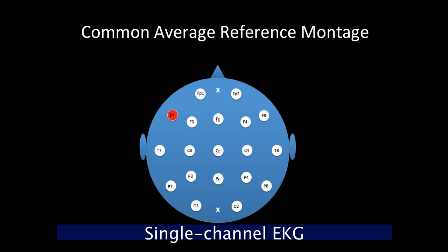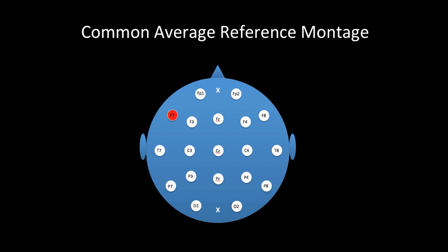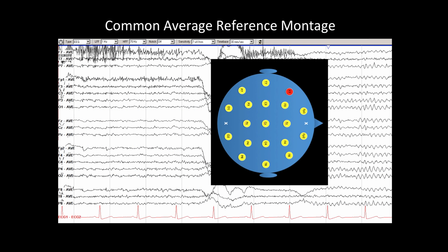Another common type of montage is called a common average reference montage. Here, in a single channel, rather than looking at the difference between two adjacent electrodes, as in a bipolar montage, we look at the difference between an electrode of interest and an average of the signals of the rest of the head. Here we can see the layout of an average reference montage, which is very similar, but again we are comparing each channel to an average of the rest of the head.